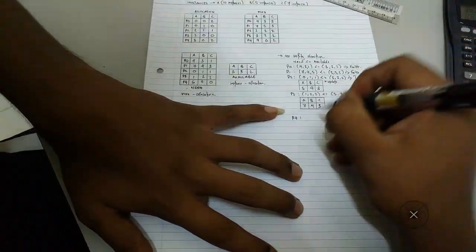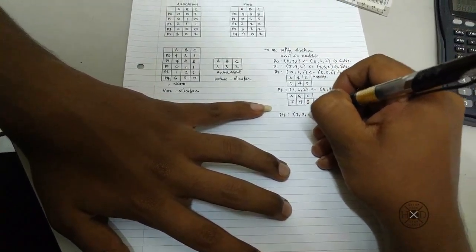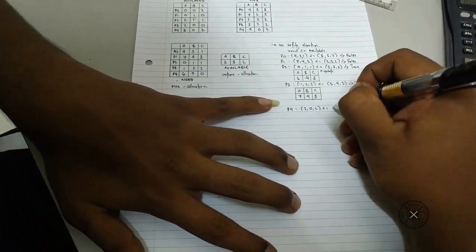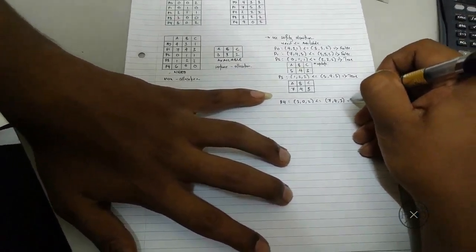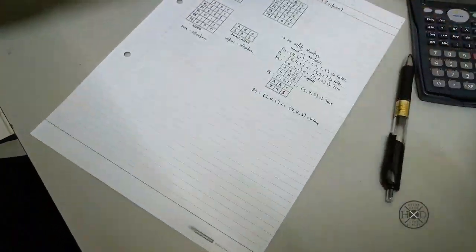Now I proceed to process 4. Process 4 is 3, 0, 2 less than equal 7, 4, 3. So it's true. So we will update again.